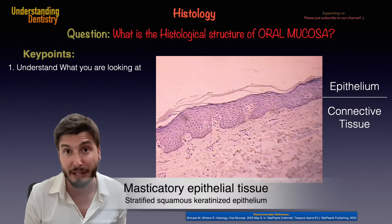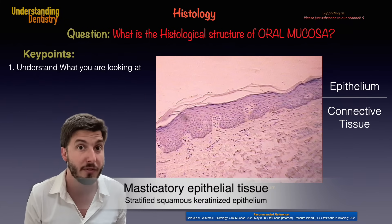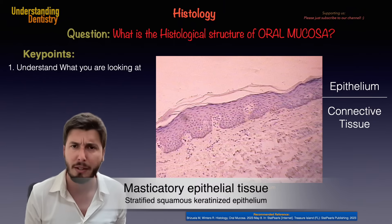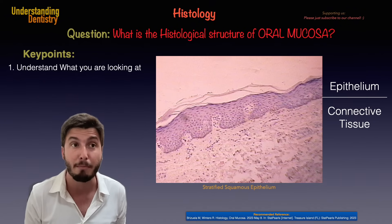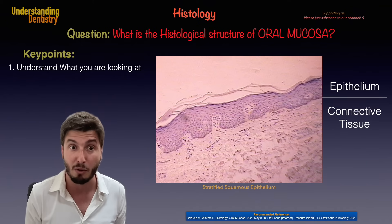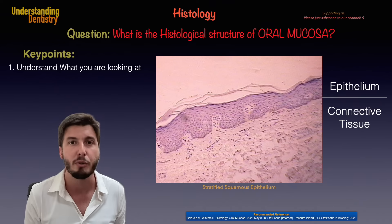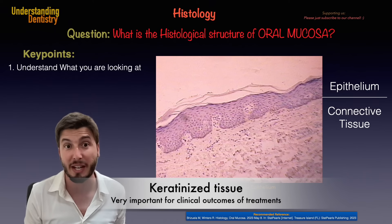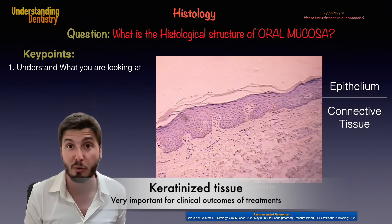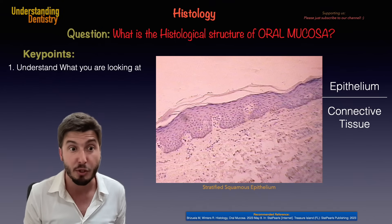Then we have the masticatory epithelium, which is the one of the hard palate and of the gingival tissue. This is important because it's very important to know about the amount of keratinized tissue of the patient. Even for dental implants and other oral surgeries, the more and the better the keratinized tissue of the patient, the better are the chances for a good prognosis and good outcomes of the case.